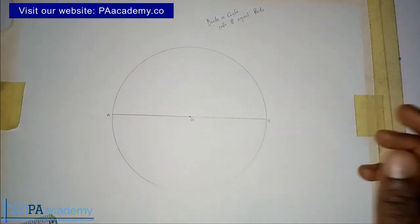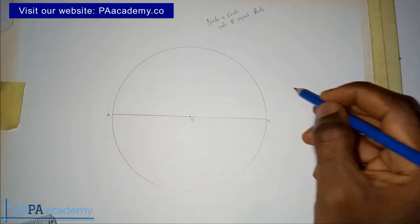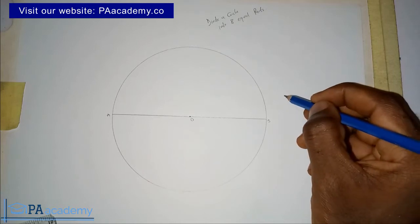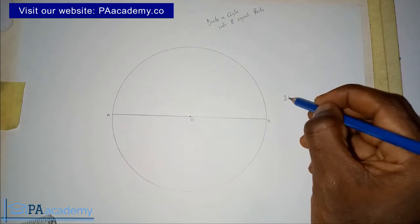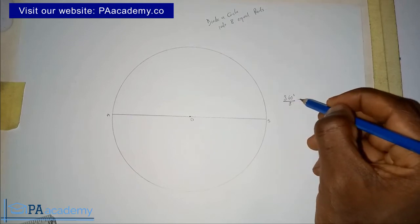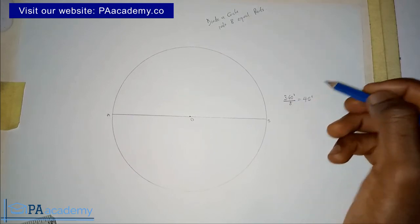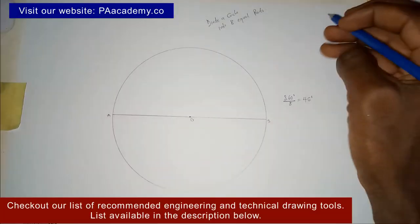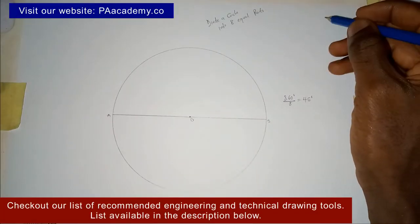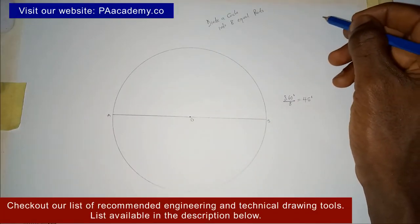Now we are dividing it into eight equal parts. Remember, in a circle, the total angle is 360 degrees. So that will be 360 degrees divided by 8, which gives us 45 degrees. That means each of those parts are going to be 45 degrees apart.